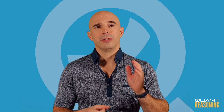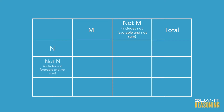Do that for each candidate separately. So you've got M and not M — and that not M includes within it two categories: not favorable and not sure. Similarly, you'll have N and not N, and not N includes not favorable and not sure. This is how we digest the information to solve the question using a Carroll diagram.